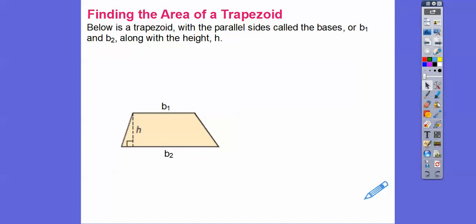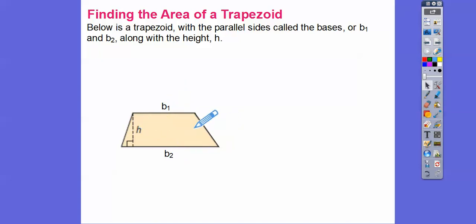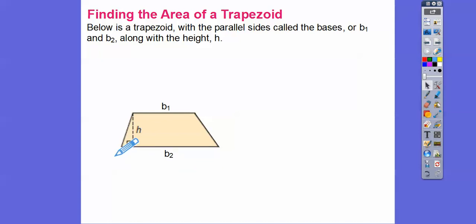Here's a trapezoid. A trapezoid has only two parallel sides — the other sides are not parallel. The parallel sides are called the bases, and the non-parallel sides are called the legs. We'll call them base 1 and base 2, written B-sub-1 and B-sub-2. And here's the height.